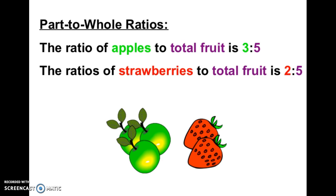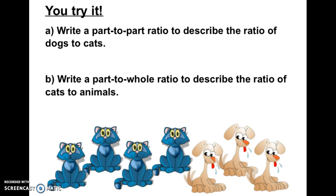So I want you to try it. Pause the video and see if you can answer these questions about the picture below. First, write a part-to-part ratio to describe the ratio of dogs to cats. Then write a part-to-whole ratio to describe the ratio of cats to animals.